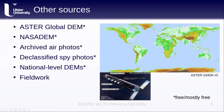You can also acquire your own DEMs through fieldwork, as discussed in the previous photogrammetry lectures. This list is not exhaustive. Most of these sources are either freely available or mostly free — for example, the declassified spy photos cost about 30 US dollars per individual photo, which, considering the potential value of these images, is actually fairly reasonable.